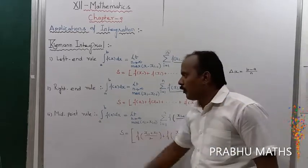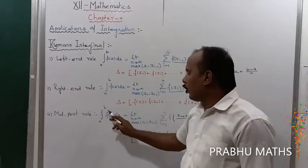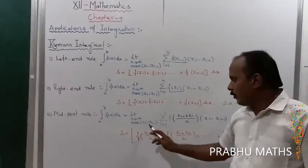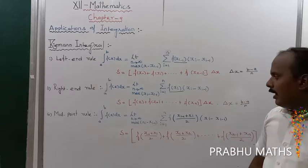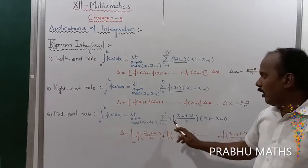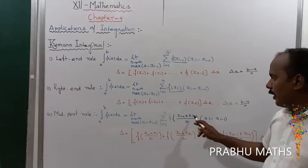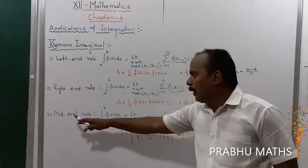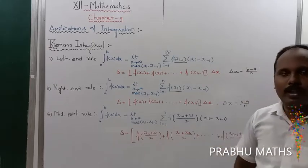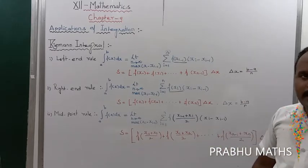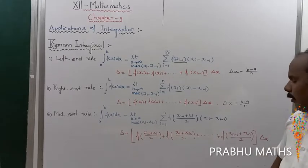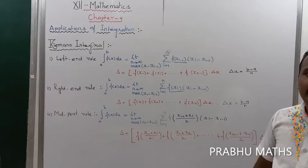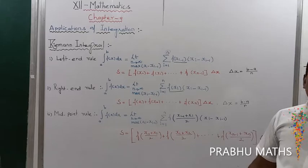The last rule is the Midpoint Rule: the integral from A to B of f(x) dx equals the limit as n tends to maximum of (x_i minus x_(i-1)), summation of i from 1 to n of f of (x_(i-1) plus x_i) divided by 2, times (x_i minus x_(i-1)). The expanded form is: S equals f((x₀ + x₁)/2) + f((x₁ + x₂)/2) + ... + f((x_(n-1) + xₙ)/2) times delta x, where delta x equals B minus A divided by N.